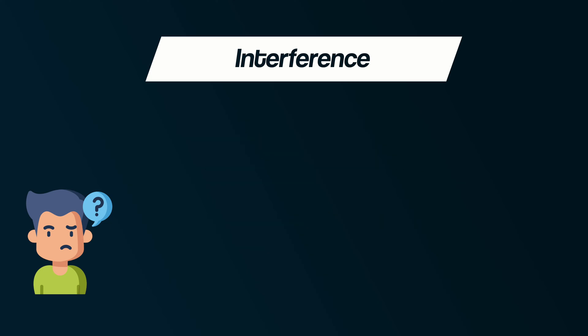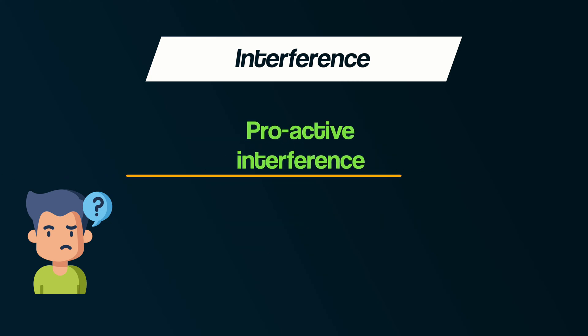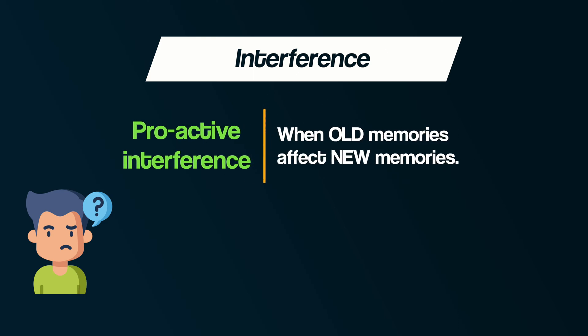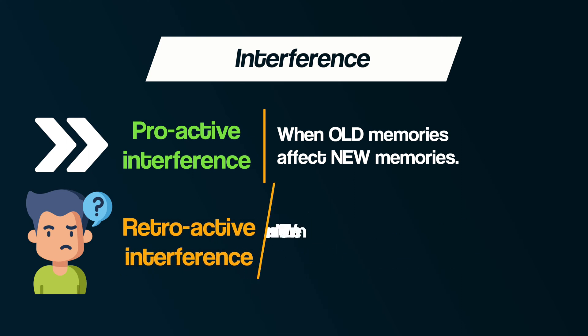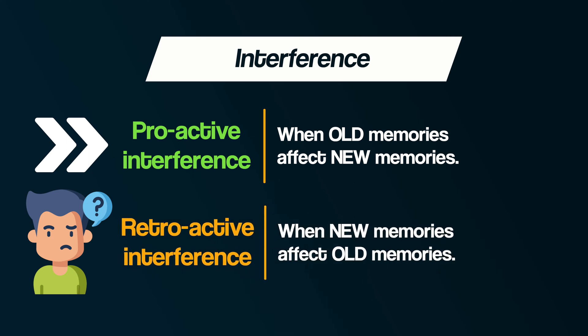The first type of interference is known as proactive interference. This is when old or existing memories in our long-term memory affect new memories — in other words, interference goes forwards. The second type of interference is known as retroactive interference. This is when new memories from new learning affect old or existing memories — in other words, interference goes backwards.